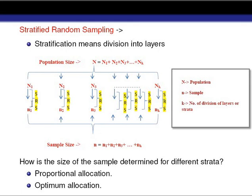Units within the strata are homogeneous — homogeneous units are grouped together in one stratum — so that the units between the strata are not homogeneous; they are heterogeneous. We have to divide the whole population in such a way that units within a stratum are homogeneous but units between strata are heterogeneous.